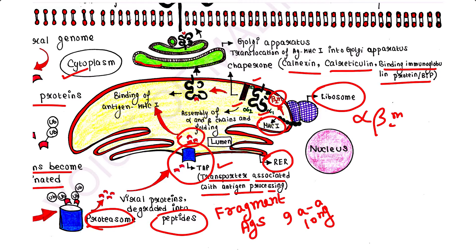The alpha chain and beta-2-microglobulin chain are assembled in the lumen of the RER. The protein gets its exact shape and orientation, and this is achieved by the help of chaperones. We have seen the names of some chaperones which are helping in this process.